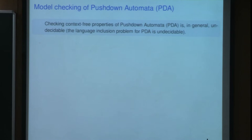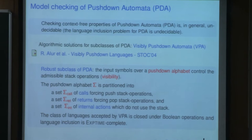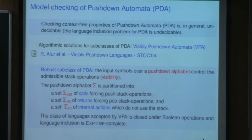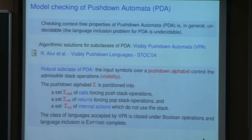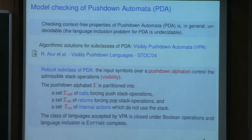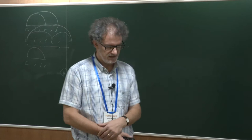It is well known in the literature that checking context-free properties of push-down automata in the general case is undecidable. The language inclusion problem for push-down automata is undecidable. So in the literature, people look at suitable subclasses, fragments of these formalisms, and one of the most successful ones is the class of visibly push-down automata. This is a quite robust subclass in which the input symbols over a suitable push-down alphabet allow you to control the admissible stack operations. This is the visibility requirement assumption property.